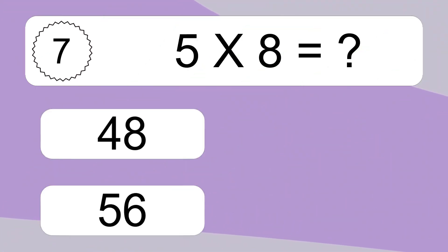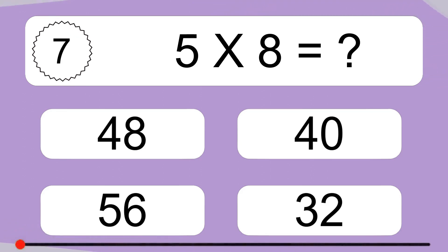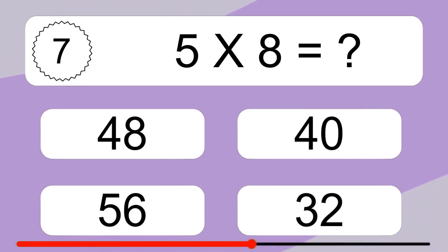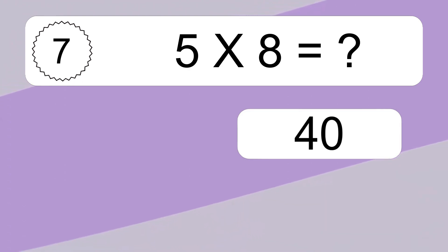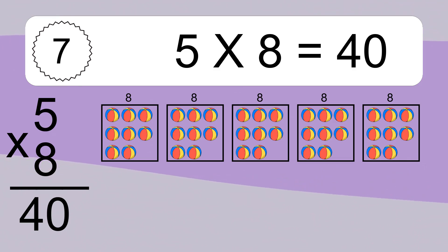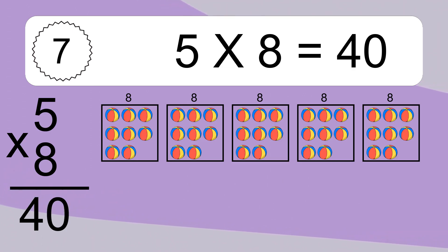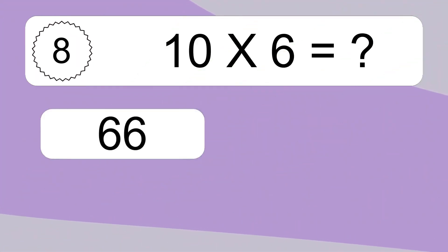5 times 8 equals what? 5 times 8 equals 40. We have 5 boxes, and each box has 8 colorful balls inside. If you count all the balls in all the boxes together, you will have 5 times 8 balls. This equals 40 balls.